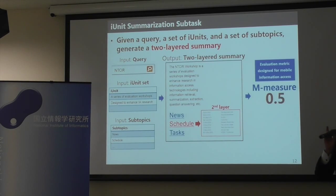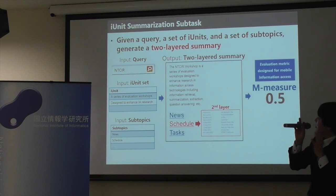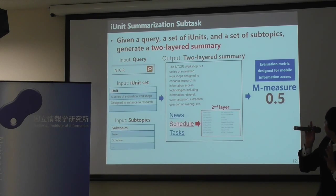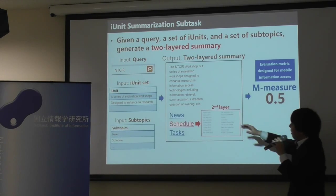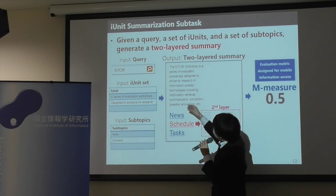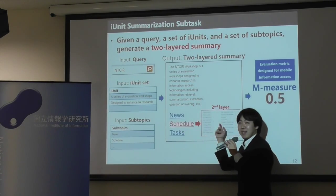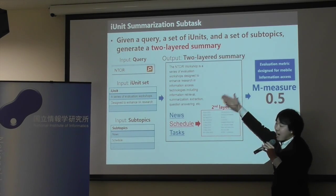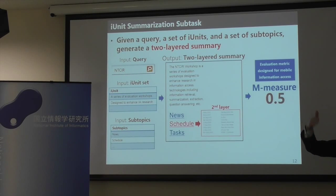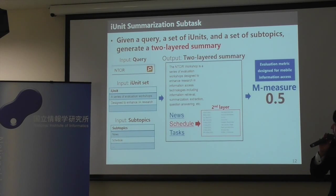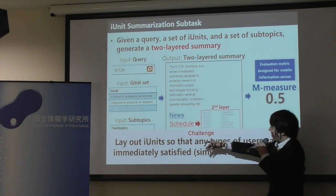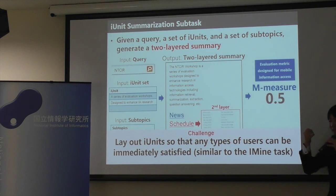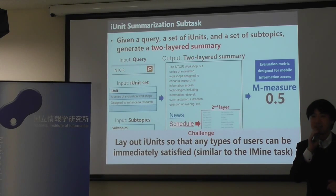The second subtask is called the iUnit summarization subtask. Given a query, a set of iUnits, and a set of subtopics, your task is to generate a two-layer summary. The first layer contains text as well as links to the second layer. You have to select which iUnit should appear in the first or second layer, and this will be evaluated by M-measure developed in Mobile Click 1. The challenge is how to lay out iUnits so that any type of user can be immediately satisfied.